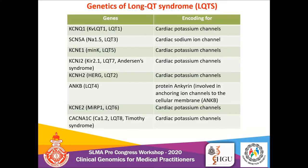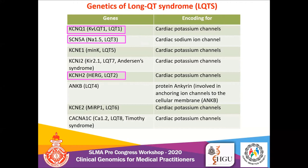Among the eight genes causing autosomal dominant Long QT syndrome, six are related to cardiac potassium channels, one is related to a cardiac sodium channel, and the remaining one is associated with the protein ankyrin. Mutation in one of three highlighted genes is associated with almost 85% of cases, so the genetic screening panel should include these genes.